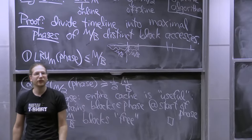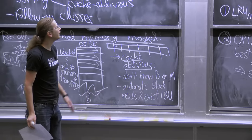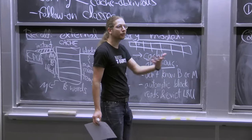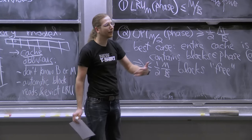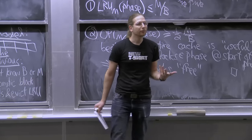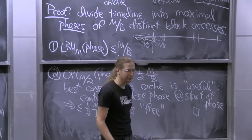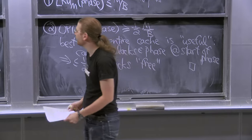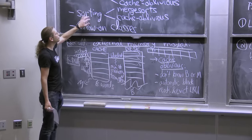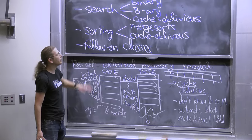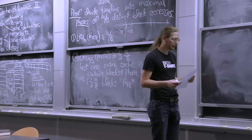Changing the cache size by a constant factor only affects our bounds by a constant factor, since all bounds have polynomial dependence on M — typically 1/M, 1/sqrt(M), or 1/log(M). So this factor-of-2 resource augmentation is good enough for cache oblivious algorithms. That's why the model is reasonable. Now we'll talk about two basic problems — searching and sorting an array — in both models.